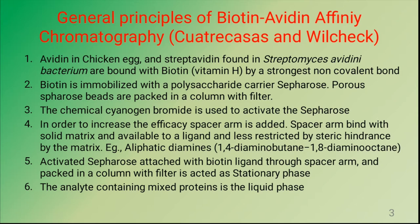Examples for spacer arms are aliphatic diamines such as diaminobutane, dianate, and diaminooctane. The activated sepharose attached with biotin ligand through a spacer arm is packed in a column with a filter and is ready to perform the chromatography. This part is called the stationary phase.